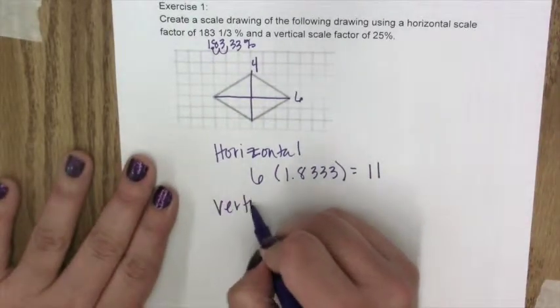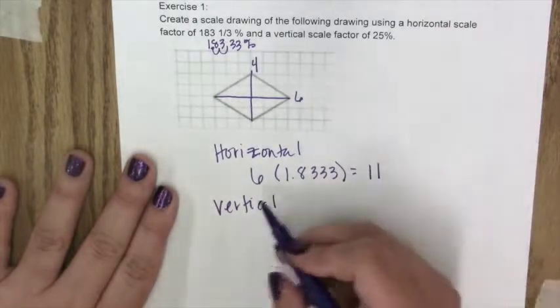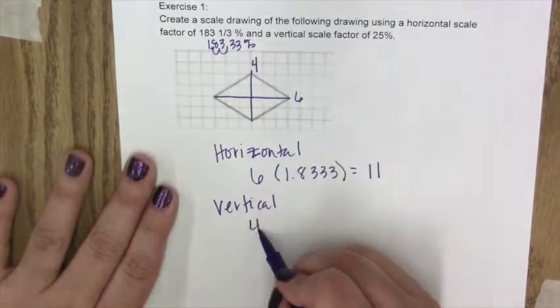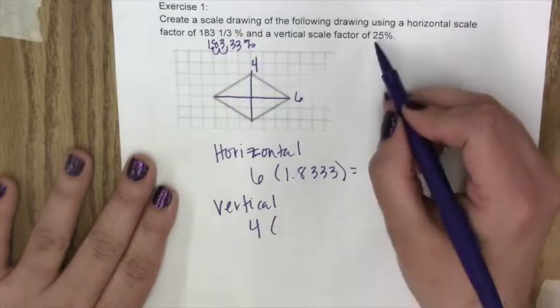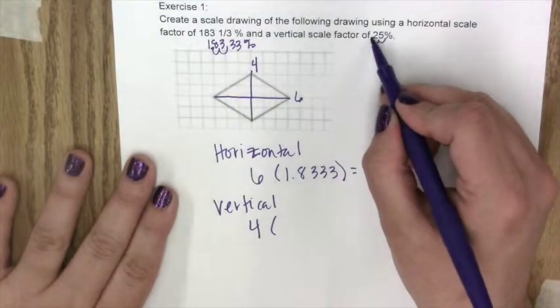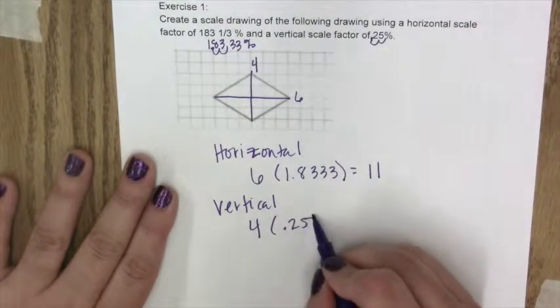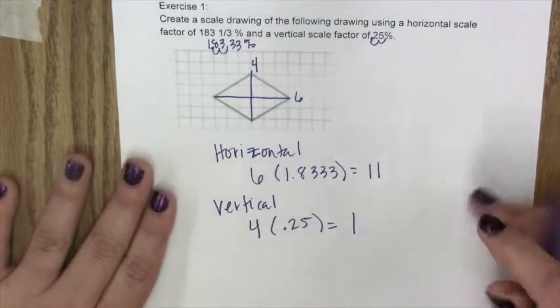Let's do our vertical which is 4 and we're multiplying this by a scale factor of 25% which would be 0.25. So we get a vertical distance of 1.